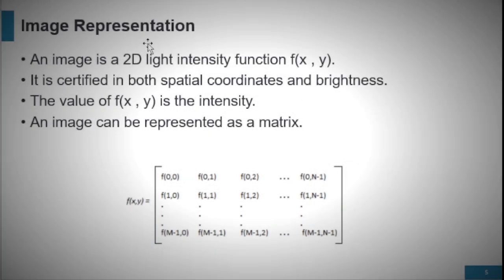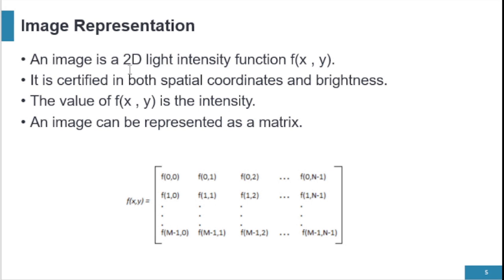An image is a 2D light intensity function f(x,y). It is specified in both spatial coordinates, that is x and y, and brightness. The value of f(x,y) is the intensity and the function f is known as amplitude.